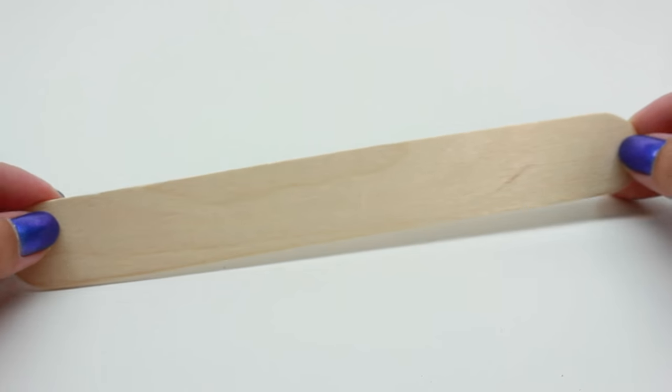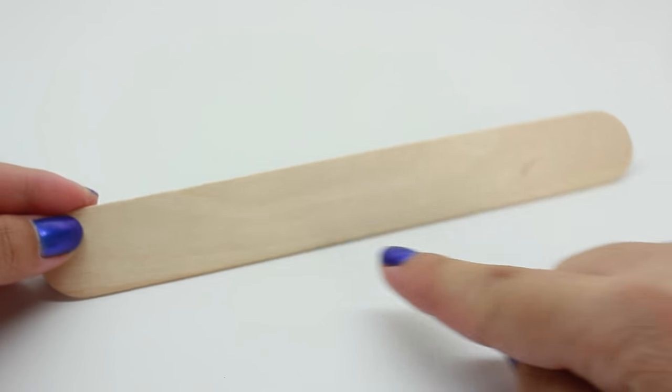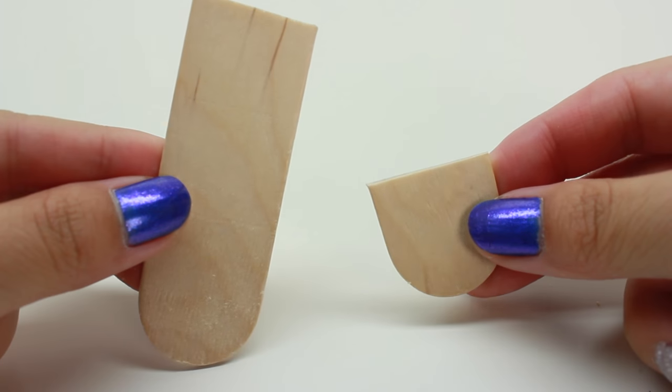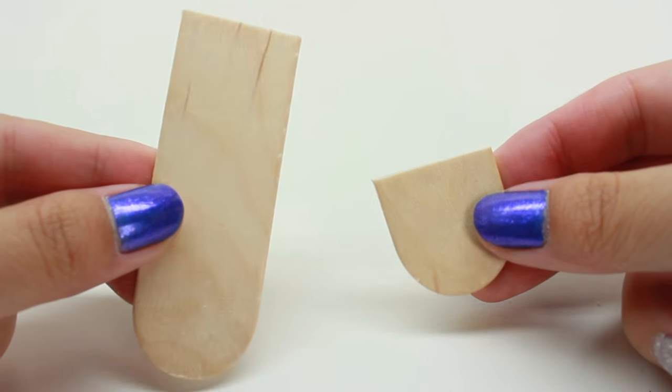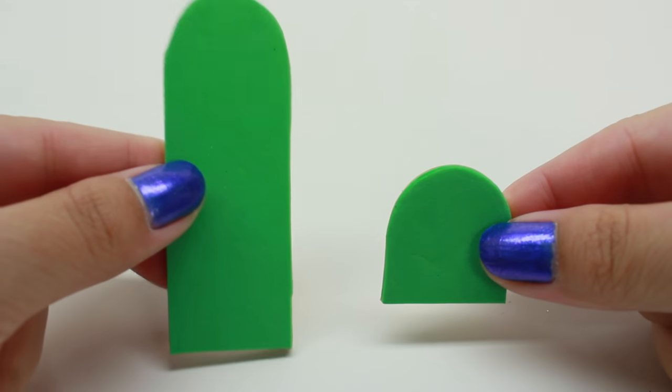Now go ahead and take a jumbo popsicle stick and cut shapes out like this, and then cover it with foam paper. This is what you should have.